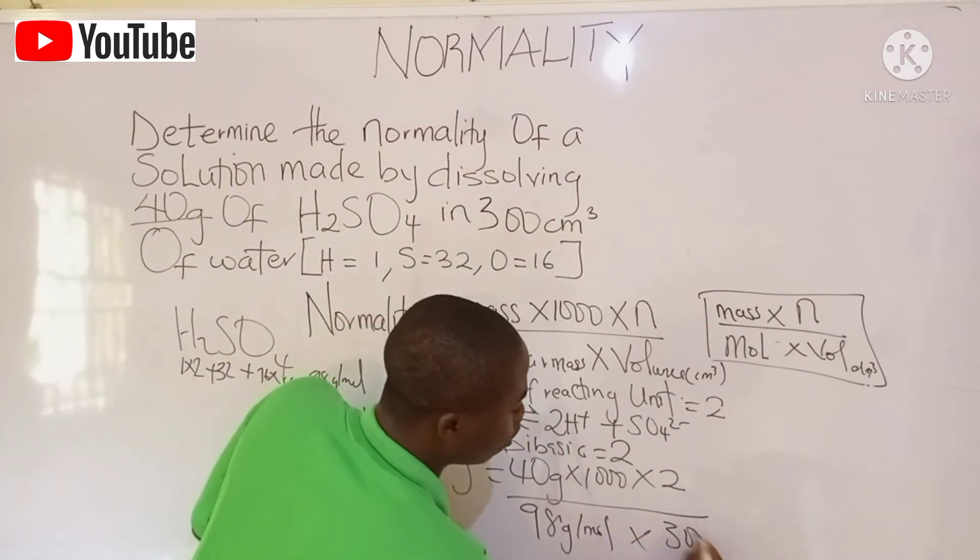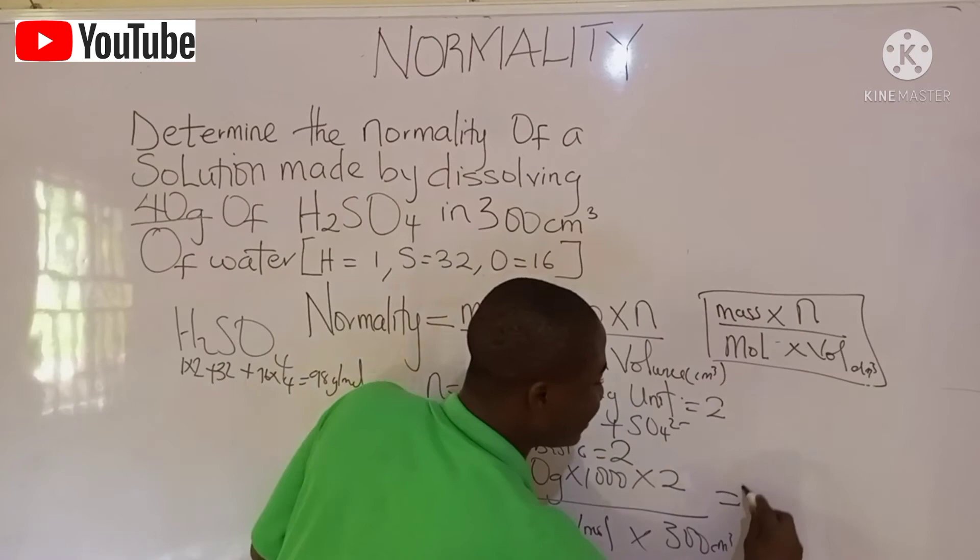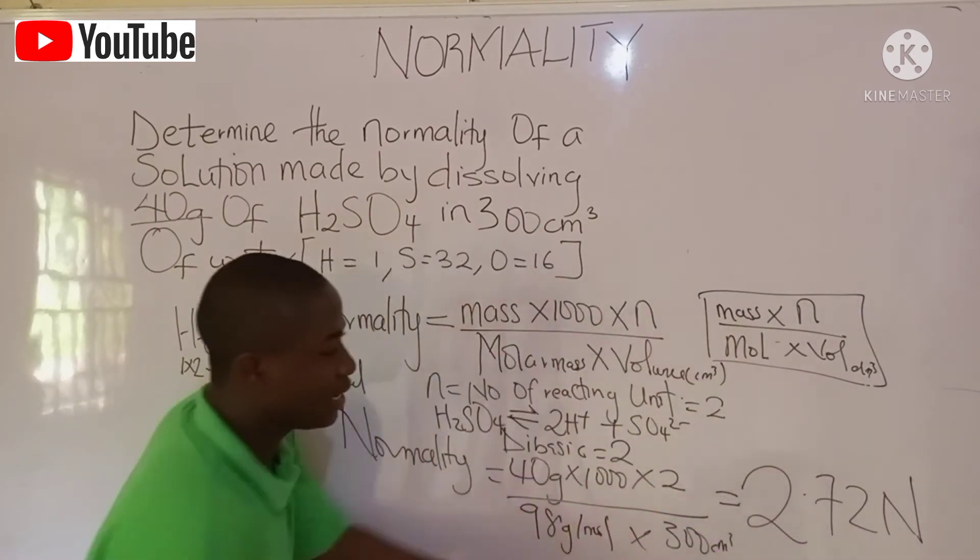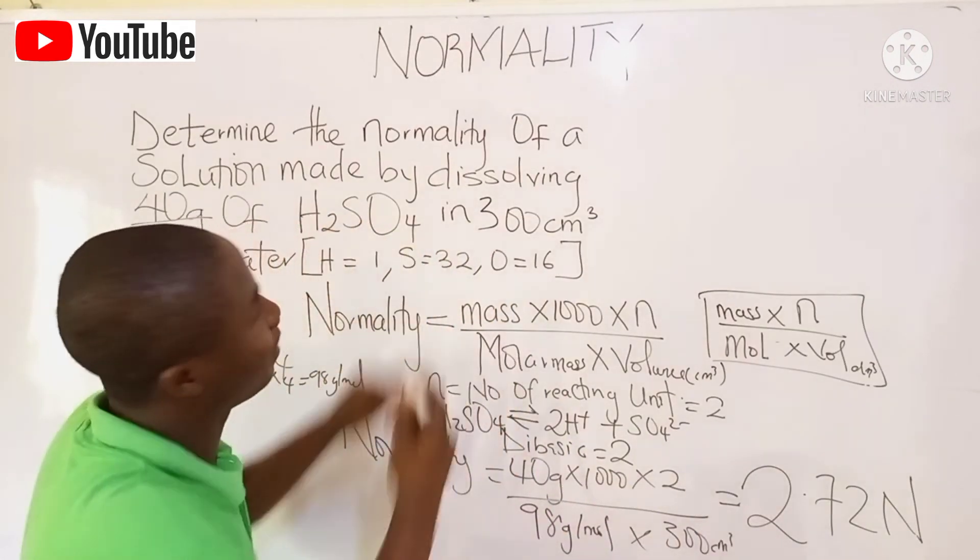So basically, times the volume, which is 300 cm³. So basically, when we hit our calculator, we get the normality to be 2.72 normal. It is 2.72 normal, because normal is the SI unit for normality.